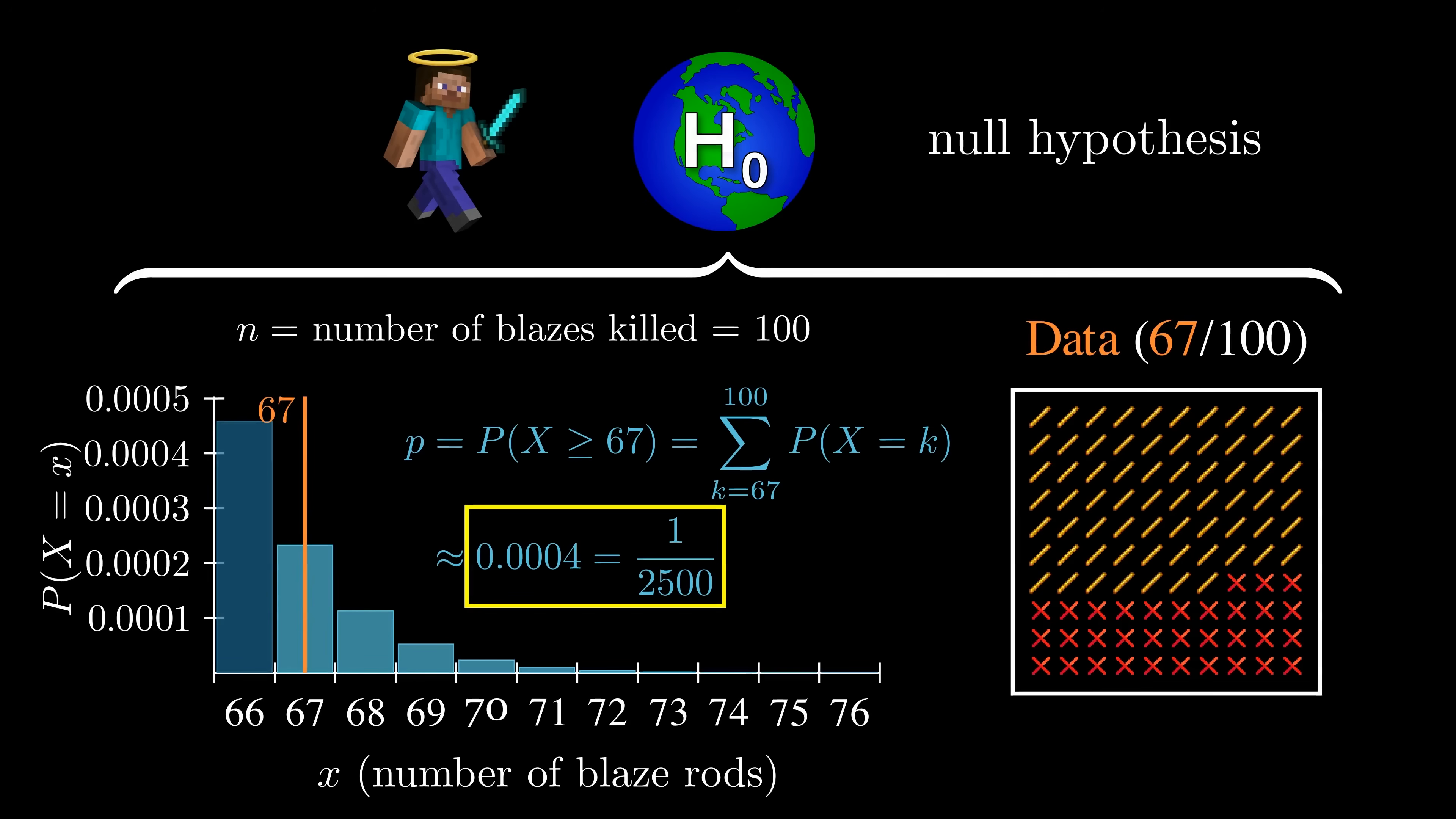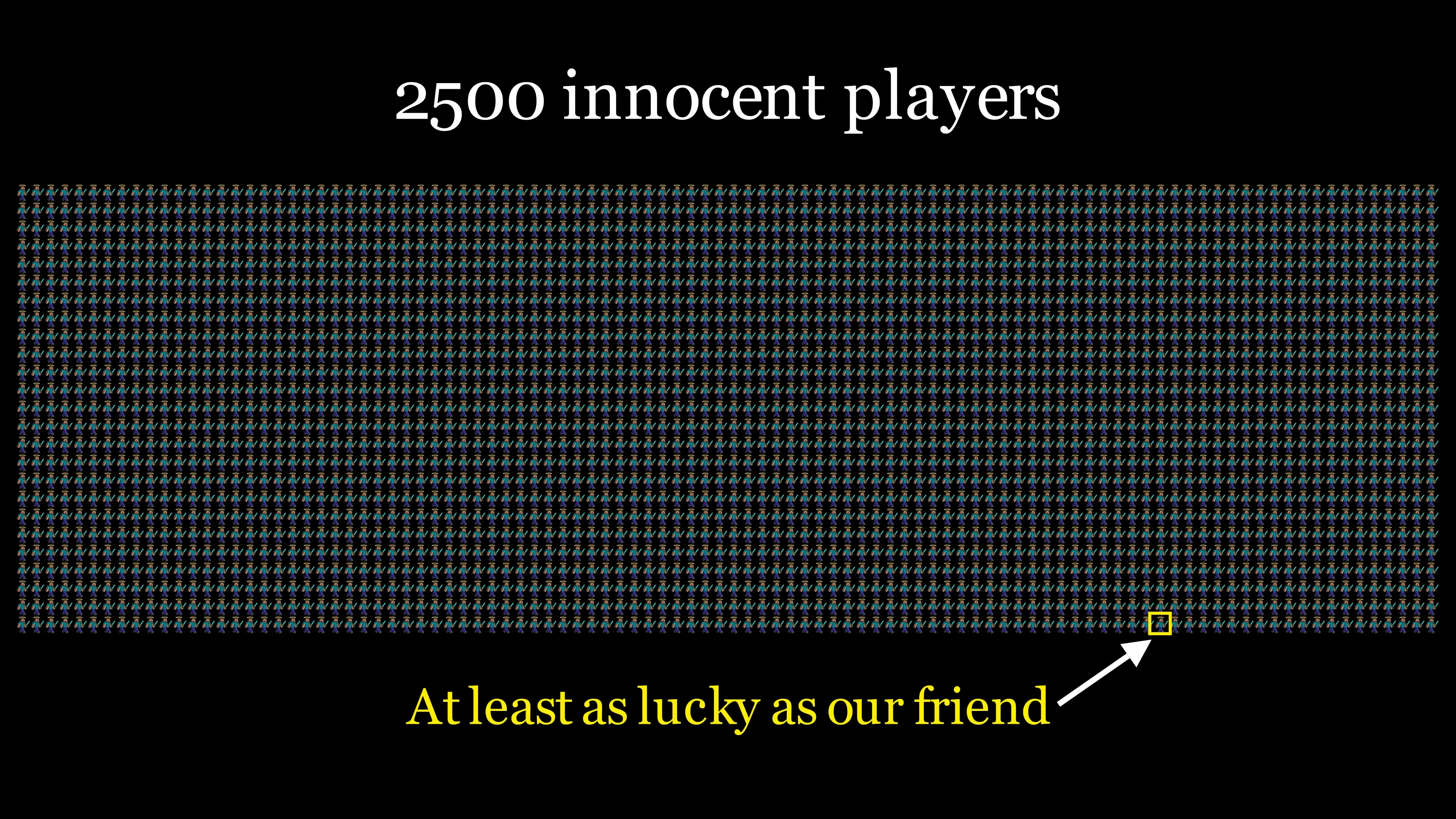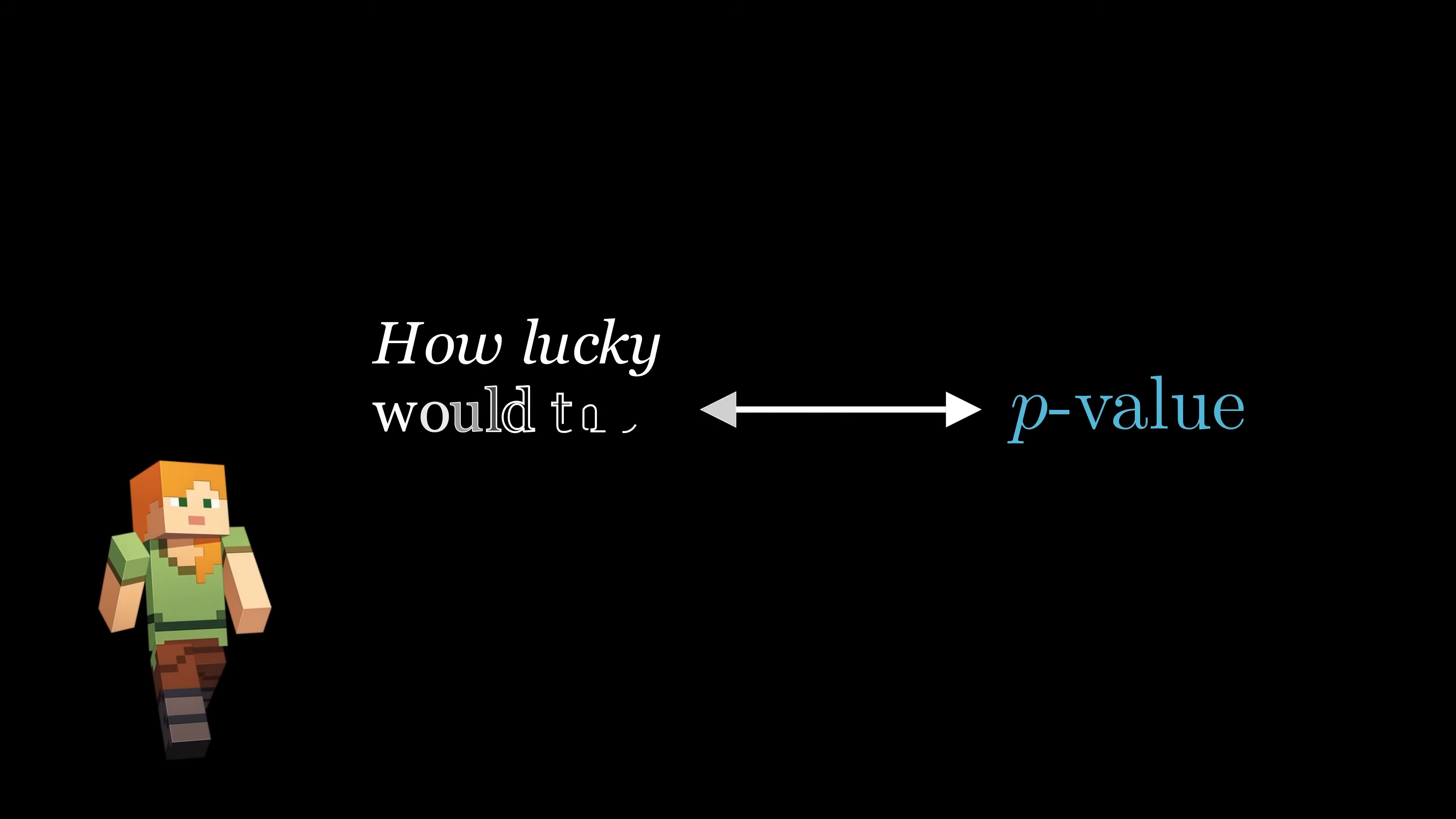Think for a second about what this 1 in 2500 p-value means. It means that if we observed 2500 non-cheaters playing, on average only one of them would get as lucky as our friend. Hopefully, now you're able to appreciate what we said earlier about the p-value quantifying how lucky our friend would have to be if they weren't cheating.